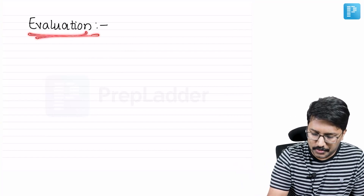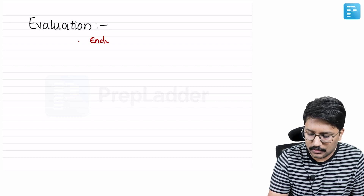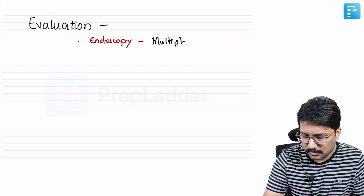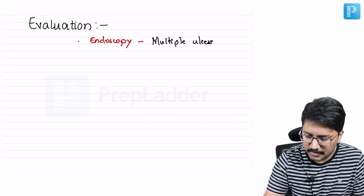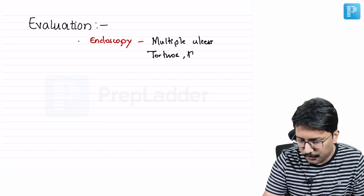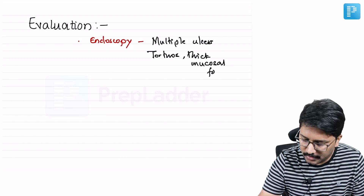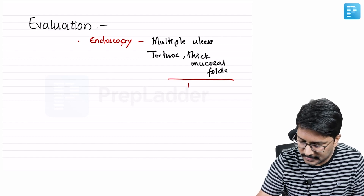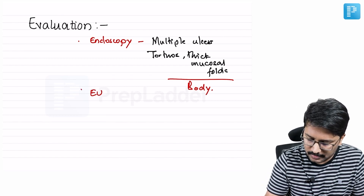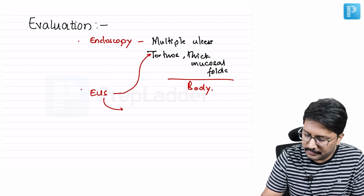You will have additional pointers to suspect Zollinger-Ellison syndrome stemming from endoscopy. On endoscopy, you might notice multiple unusual ulcers — that would be a pointer — and you would also see thick tortuous mucosal folds, mainly on the body part because that is where the parietal cells are. If you had done endoscopic ultrasound, you could have appreciated the same findings and it would also help identify the tumors.